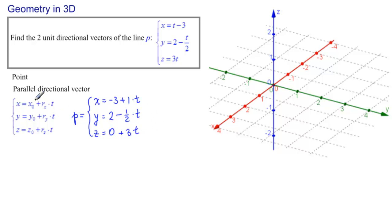And then we can easily see that the point is minus 3, 2, 0. And the parallel directional vector is 1 minus 1 half, 3. So, let's write those down. We have the point T equals minus 3, 2, 0. And the parallel directional vector is RP equal to 1 minus 1 half and 3.